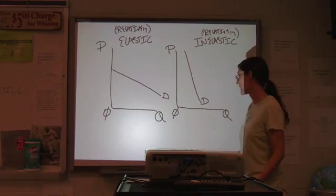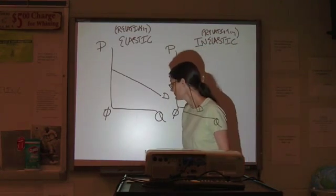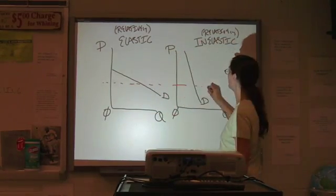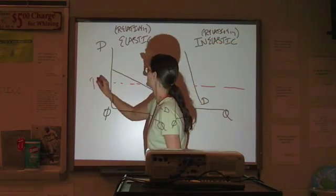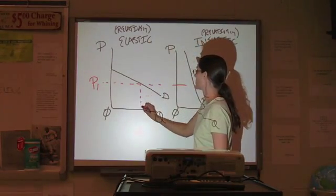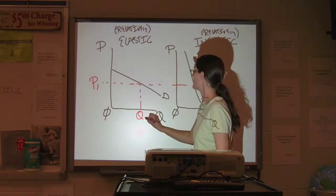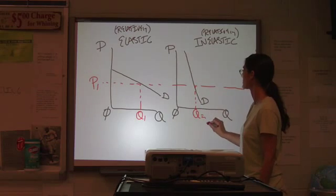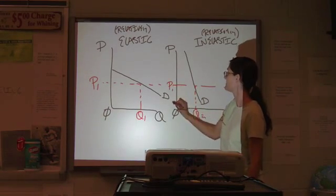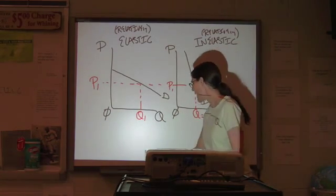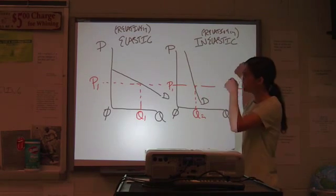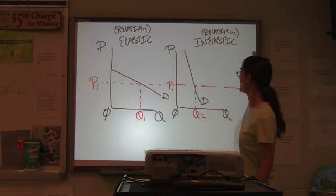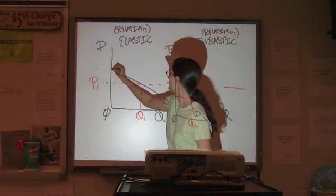Now, why is that the case? Let's say we take a given price level. Here's our quantity demanded on our first curve, and here's our quantity on our second curve. Same price level. Now, what happens if we increase price by another 50%? That would be right about here.